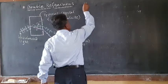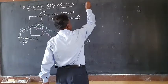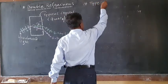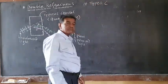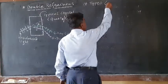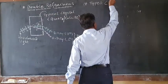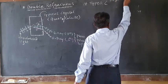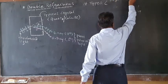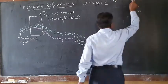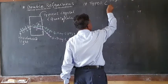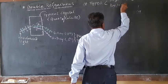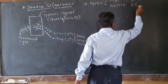Now we will see the types of double refracting crystals. There are two types: the first is the negative double refracting crystal, and the second is the positive double refracting crystal.